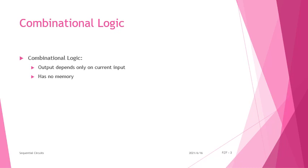For example, if you are giving input continuously, if the present input is 1 then the output is also 1 at the same time. If you change the input from 1 to 0, then at the same time the output also changes from 1 to 0. That is how input and output behave in combinational logic, which is why we do not have any memory devices in combinational logic.